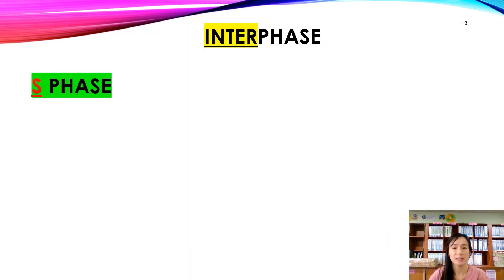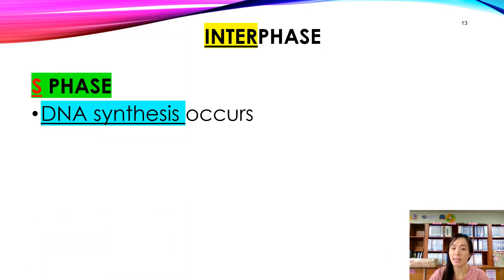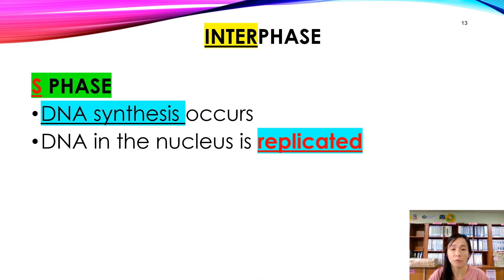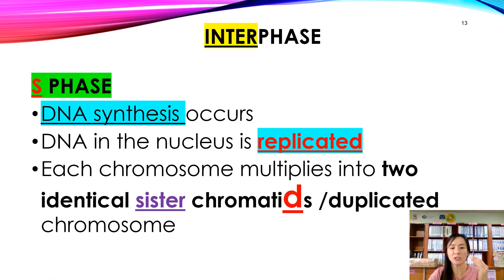During S phase, DNA synthesis occurs. S phase stands for synthesis phase. The DNA in the nucleus is replicated — each chromosome duplicates into two identical sister chromatids, also called a duplicated chromosome.